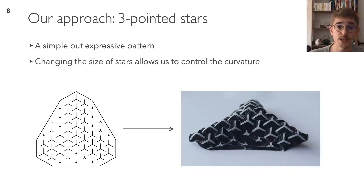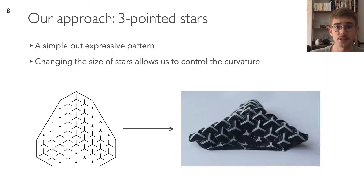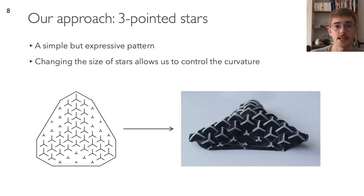These experiments inspired us to work with a dense pattern of our own making and explore its possibilities using form finding. As a first step, we created a parametric design tool based on the tiling of three-pointed stars, in which we can control the size of each individual star and the shape of its boundary. The position of each star stays fixed, but their sizes may vary, allowing us to play with the change of metric.